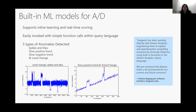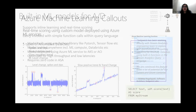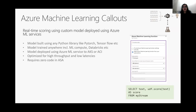Another feature is built-in ML models. For scenarios like detecting when a heater, generator, engine, or fridge is overheating, ASA provides anomaly detection functions. There are generally five types of anomalies that can be detected: spikes, dips, and positive/negative trends. Real-time scoring can be done using custom models deployed through Azure ML services, without writing any code — just reference the ML model in your SQL query.